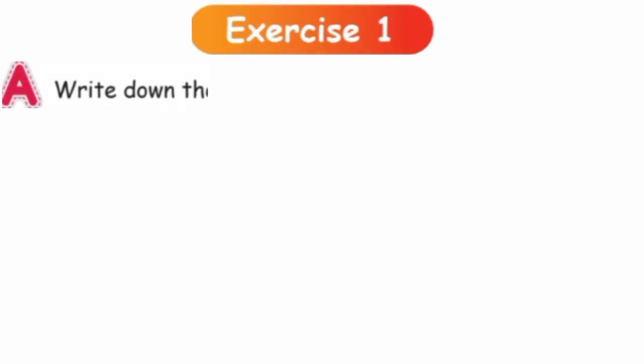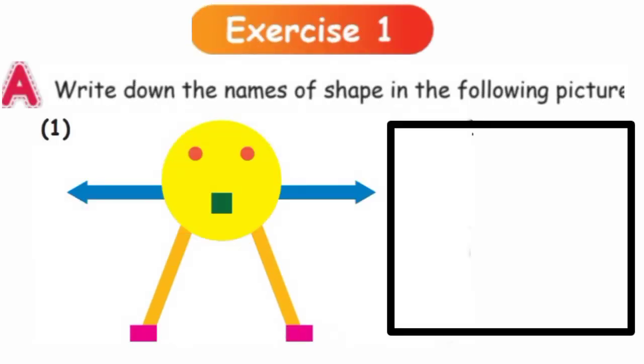Exercise 1: Write the names of shape in the following pictures. In this picture we have to write what are the shapes given. See this picture's face and eyes, it's in circle, so let's write it. See its mouth, what is its shape? Yes, square.